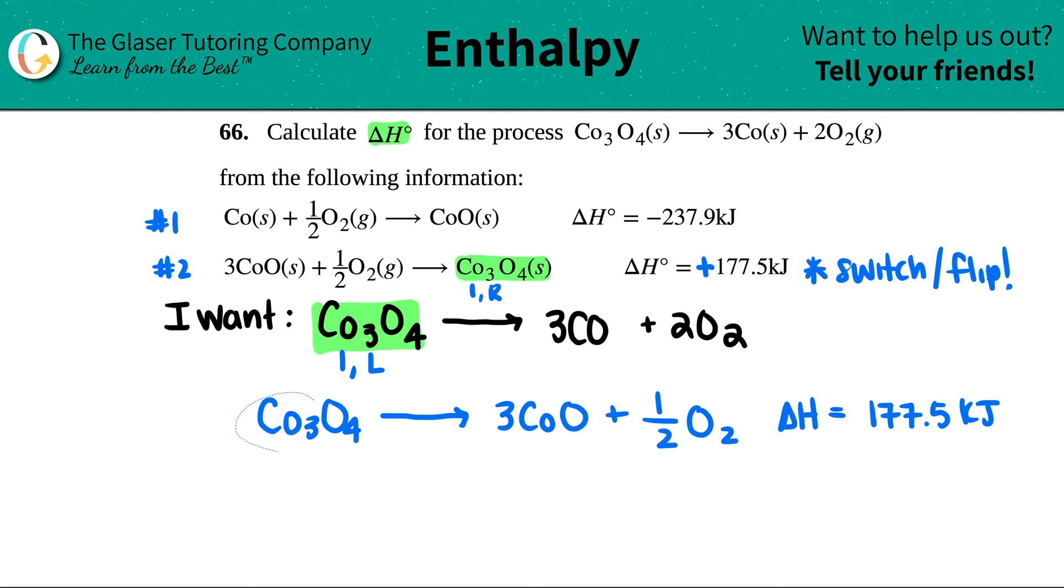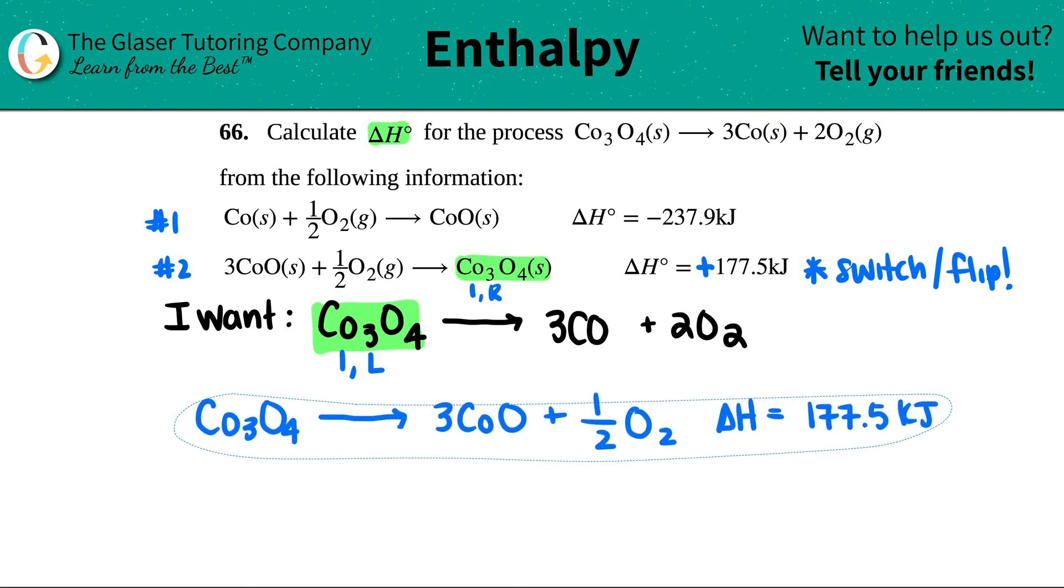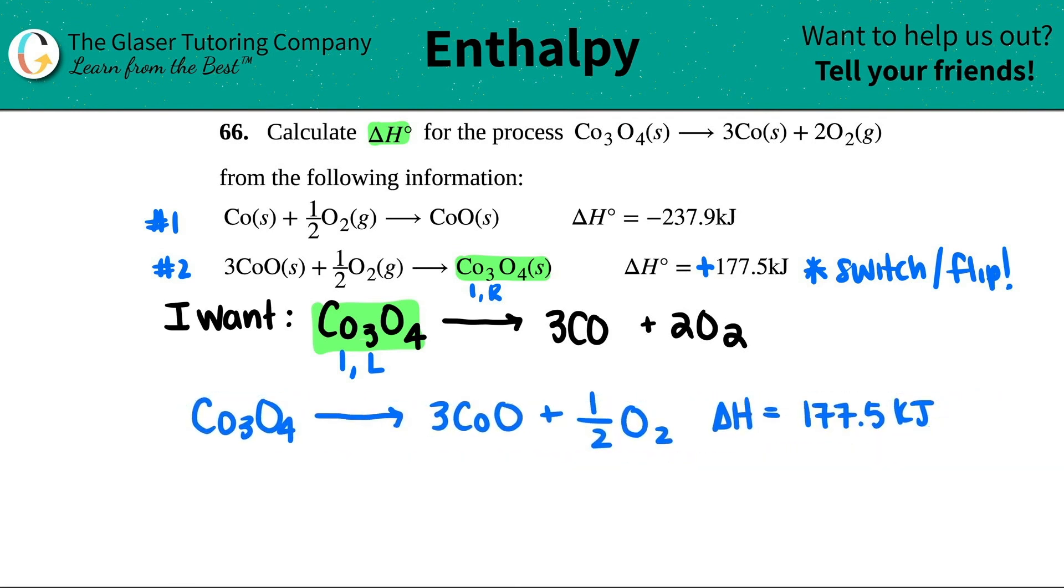Yeah, the sign has to switch. So instead of it being a negative, it's now going to be a positive. And you write that as a positive 177.5 kilojoules. Okay. First part done. Now, we basically do the same process again for the next compound.